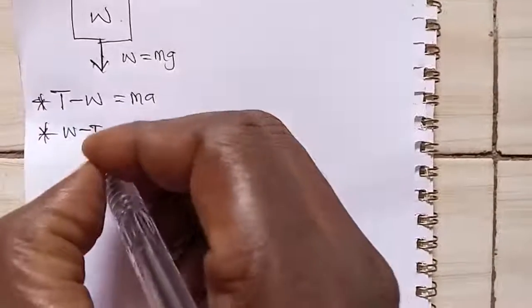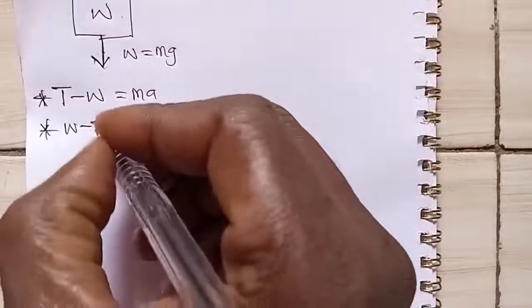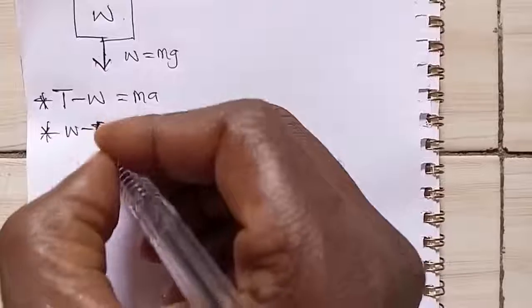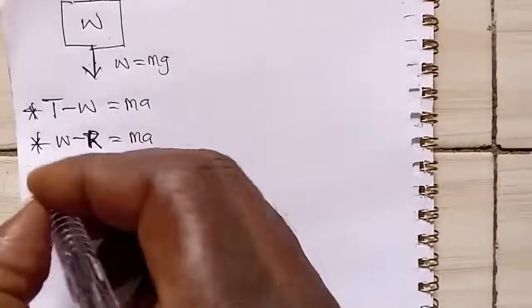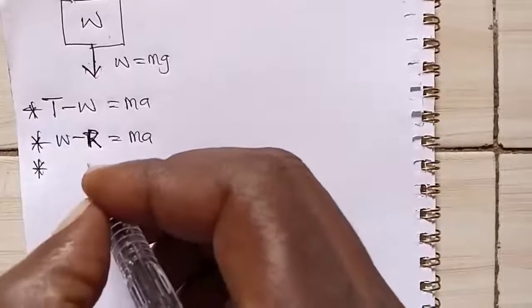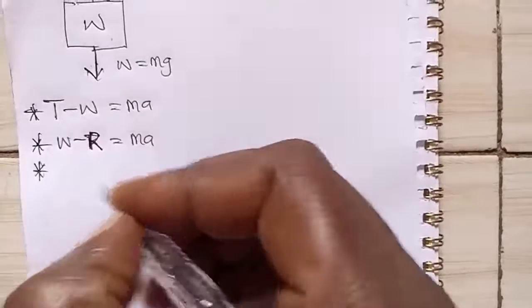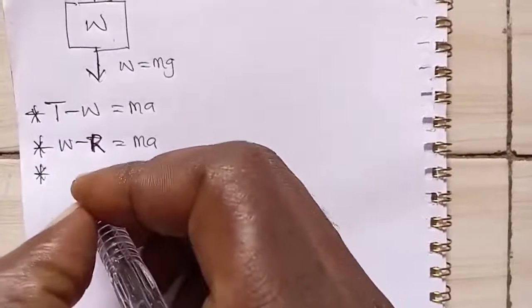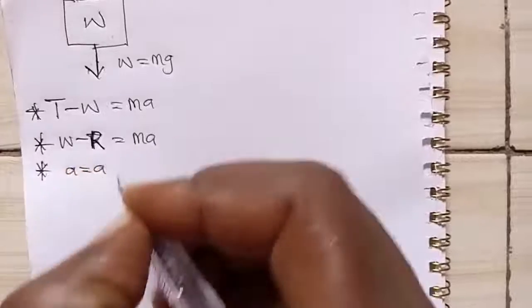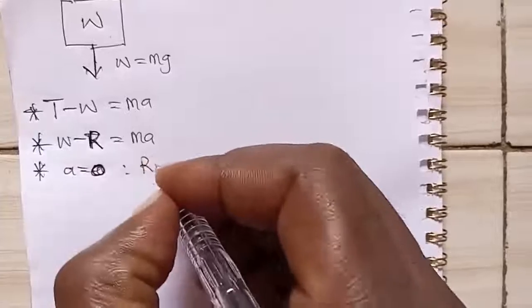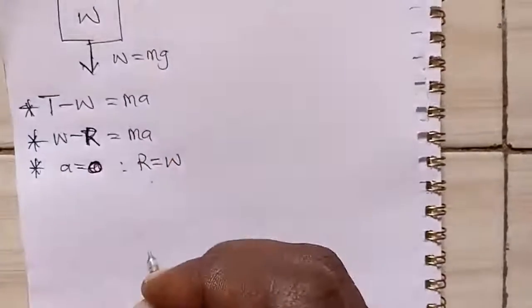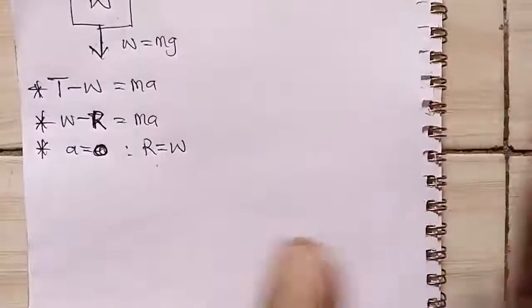Also we can consider, we can call this just reaction other than just saying tension. So since it's coming down, reaction, because they are the same. Now the third one is that when lift is stationary or moves with a constant velocity, that is, acceleration is zero. Then what it means is that the reaction is equal to the weight.